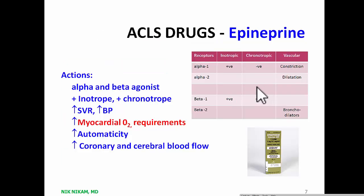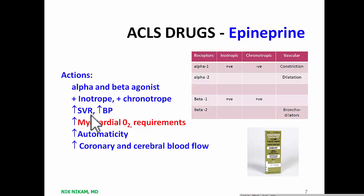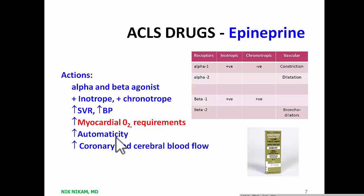Epinephrine is the most commonly used drug during cardiopulmonary resuscitation — it is the drug used first. Epinephrine has both alpha and beta agonistic properties, so it increases heart rate, increases left ventricular contractility, and by causing vasoconstriction increases systemic vascular resistance and blood pressure. Because of all these positive effects on the cardiovascular system, it will increase myocardial oxygen requirement, which is one of the unwanted side effects. Epinephrine also increases automaticity and improves coronary and cerebral blood flow.